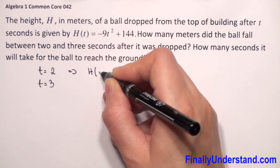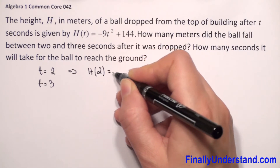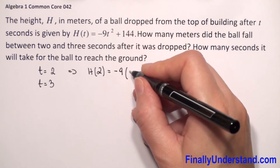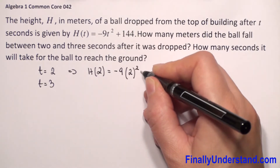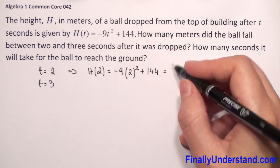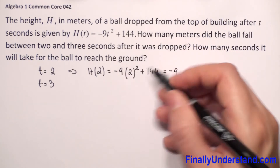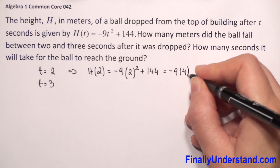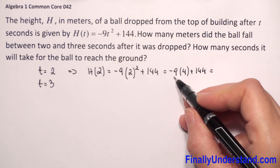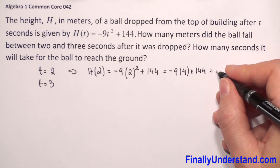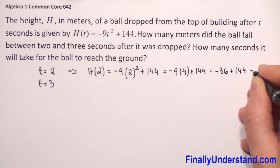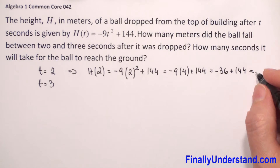So we will have h(2) equals negative 9 times 2 squared plus 144. This equals negative 9 times 4, plus 144, which gives us negative 36 plus 144, so this equals 108.